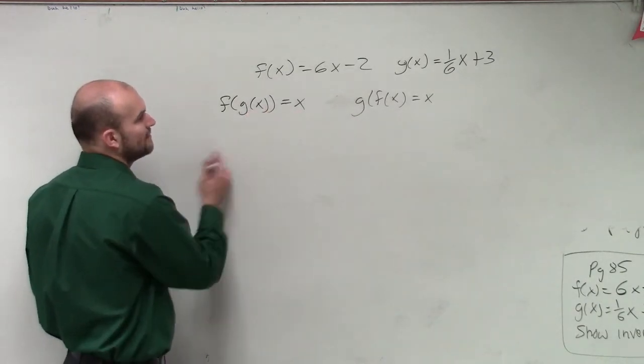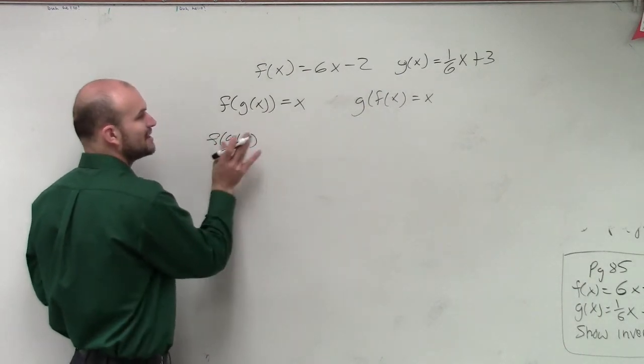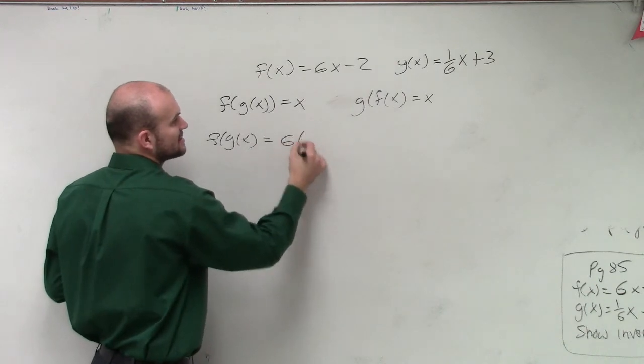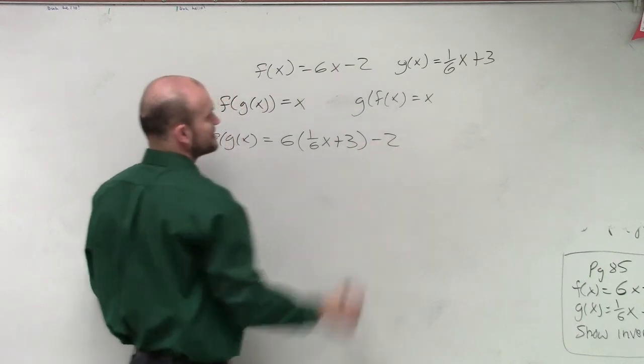So if I do f of g of x, that means I'm going to plug my g of x function into my f of x function, which gives me 6 times (1/6)x plus 3 minus 2.